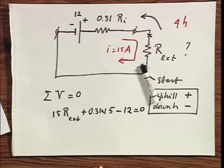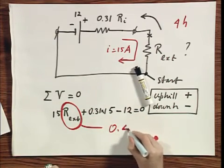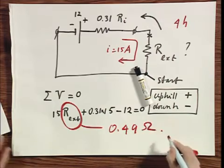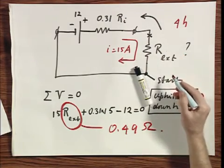So this is minus twelve equals zero. I know everything in this equation except this, and I find, I believe, O point four nine ohms. So that is now the external resistor.